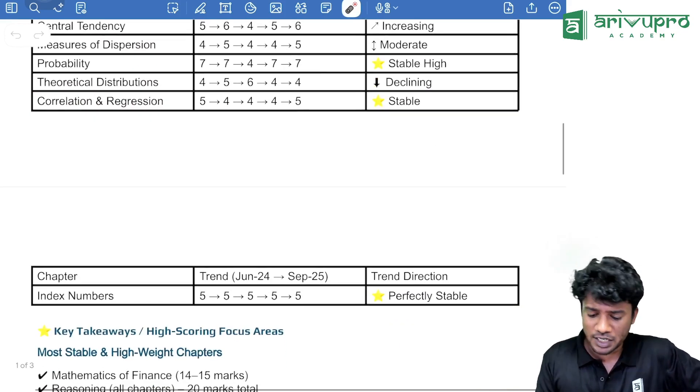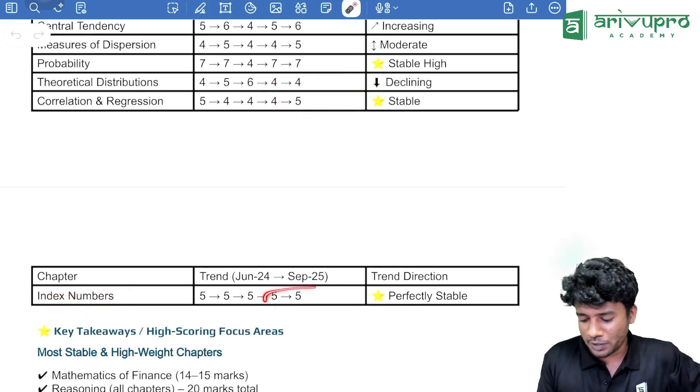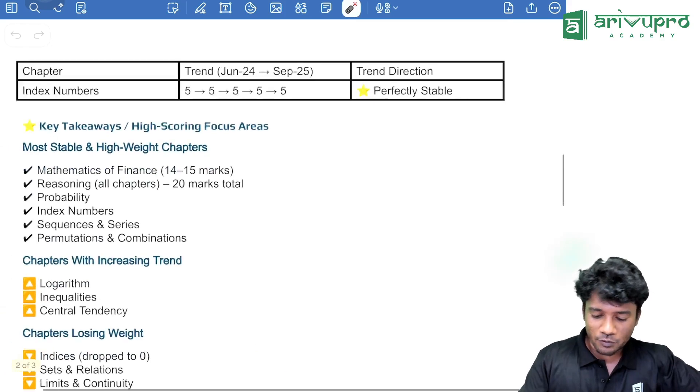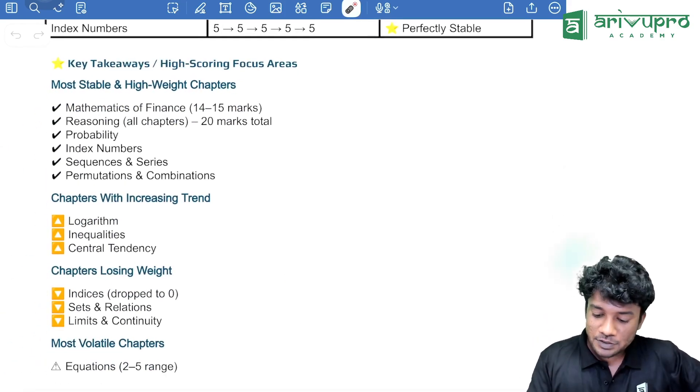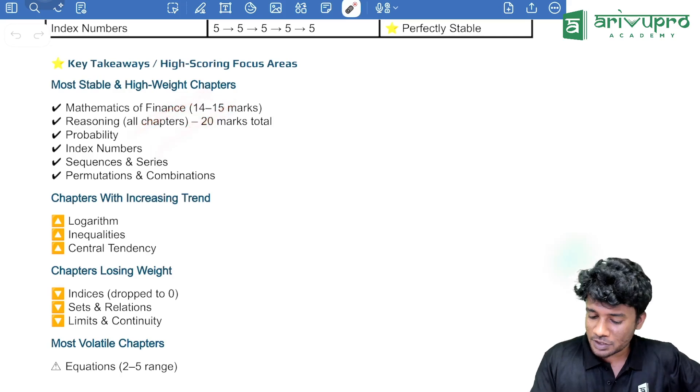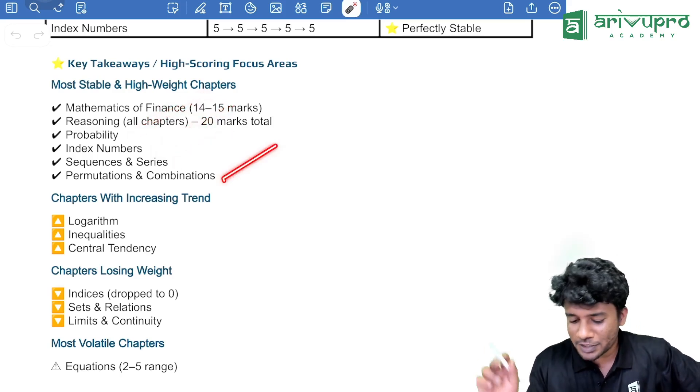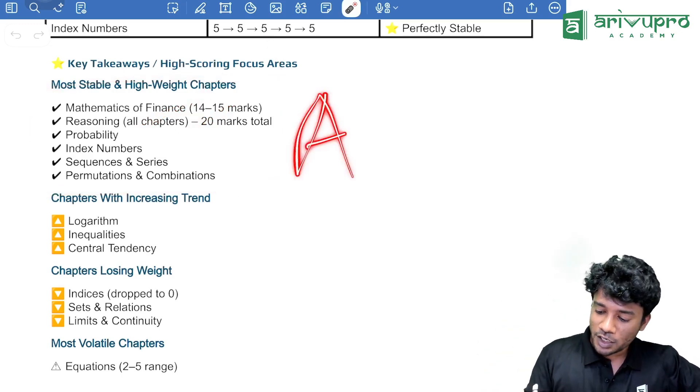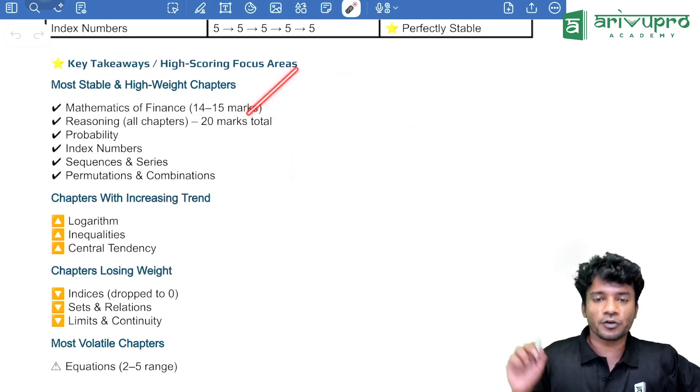Then, coming to correlation and regression and index number, it is usual 5 marks each. You can always expect that. Now, coming to our stable chapters, mathematics of finance, all the reasoning chapters, probability, index numbers, then sequence and series, permutation combination. These are usual stable chapters. So, keep it as your A-list and prepare for it.